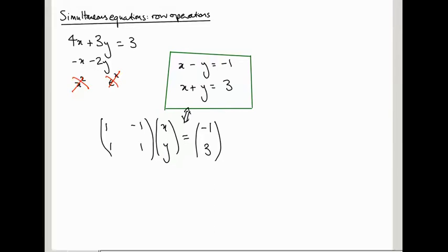Let's see why that is. If I multiply out the left-hand side, I get the vector (x minus y, x plus y). For these two vectors to be the same, it means their first component has to be the same — which gives us x minus y equals minus 1 — and the second component has to be the same, so x plus y equals 3.